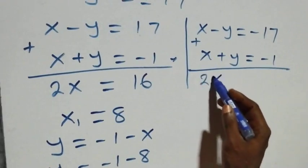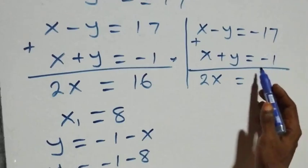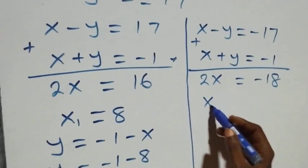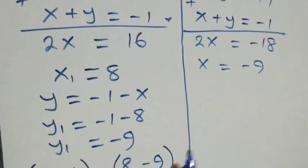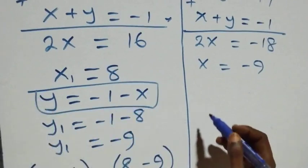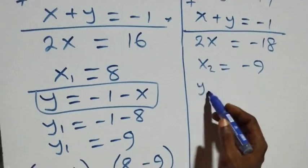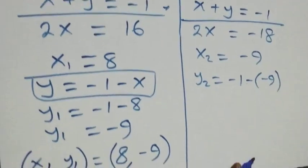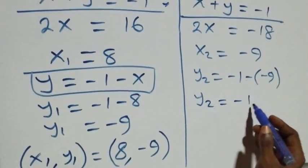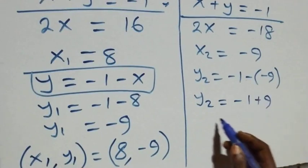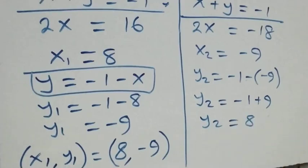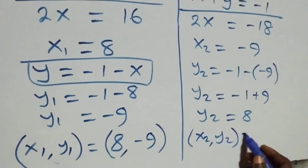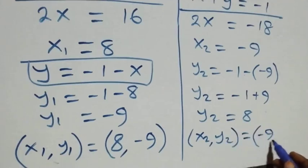For case two, x - y = -17 and x + y = -1. Adding these eliminates y, giving 2x = -18, so x₂ = -9. From equation three, y₂ = -1 - x₂ = -1 - (-9) = 8. The second set of solutions is x₂ = -9, y₂ = 8.